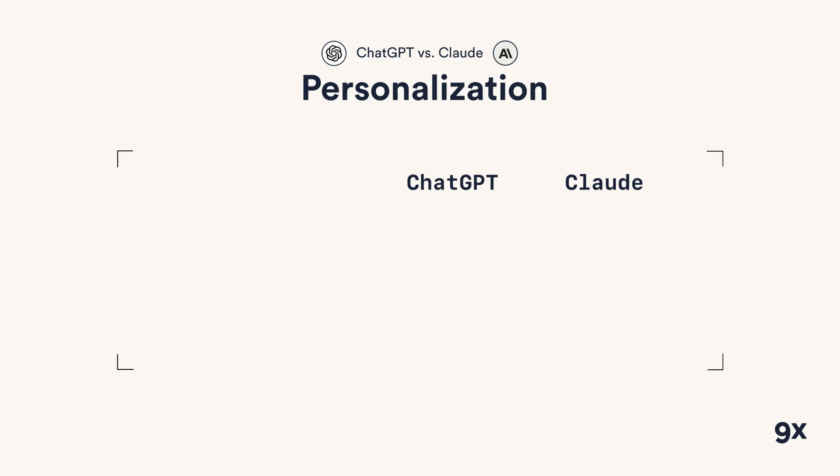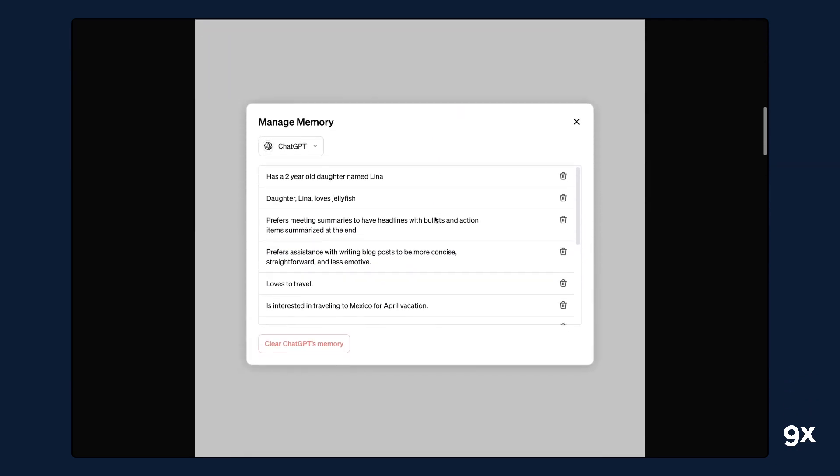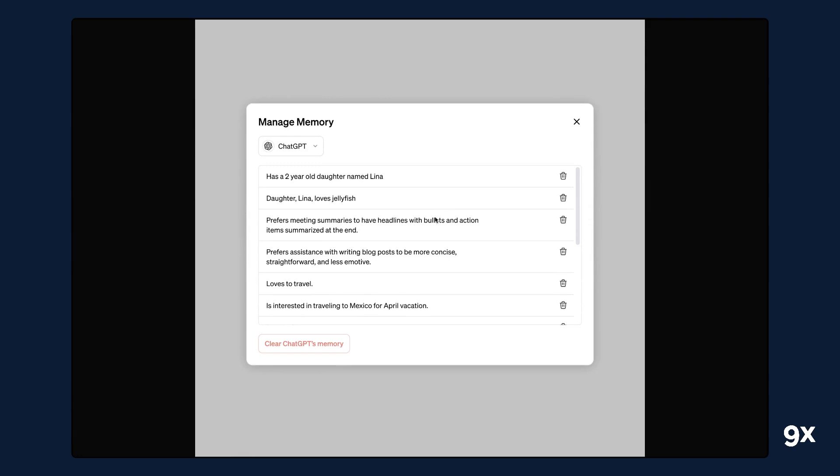Moving on to personalization — this is also very important because the more you can bring your context to these LLMs, the more specific their answers will be. One first advantage of ChatGPT over Claude is that it has memory. This was added this year and it's a pretty convenient feature. ChatGPT memorizes facts about you as you have more and more conversations with it, and there's a place inside the ChatGPT settings where you can manage this memory. This avoids having to re-explain every time who you are, what you do, and what your objectives are. Claude doesn't have this functionality yet, which forces you to provide extra context each time to get more relevant responses. I hope Anthropic adds this type of feature in the near future.